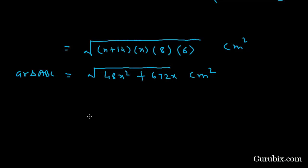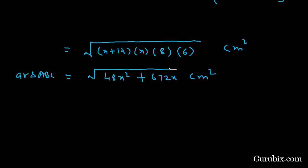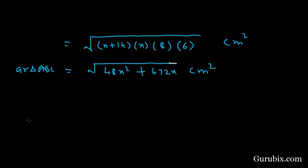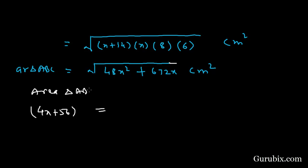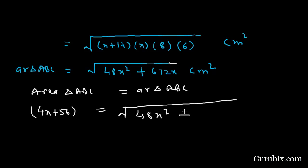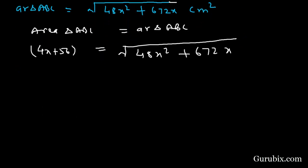We have already calculated the area of triangle ABC two ways, so we shall equate the two values. From the first method we have 4X plus 56, and from Heron's formula we have the square root of 48X squared plus 672X. Setting them equal: 4X plus 56 equals the square root of 48X squared plus 672X.